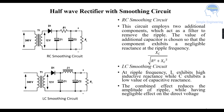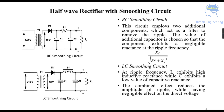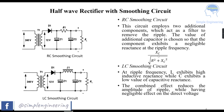For the half-wave rectifier with a smoothing circuit, we have two options: the RC smoothing circuit and the LC smoothing circuit. In the RC smoothing circuit, a resistance and a capacitor are used with the reservoir circuit. This acts as a filter to remove the ripple. The value of the additional capacitor is chosen so that these components have negligible reactance at the ripple frequency, where XC is much less than the square root of R-squared plus XC-squared.